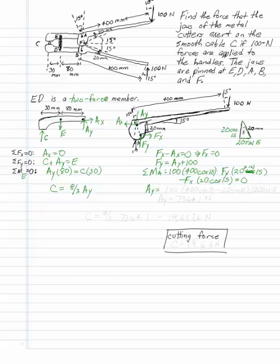You get A, Y is 100 times 400 cosine 15 minus 20 sine 15 divided by 20 sine 15. That gives you A, Y is 7364.1 newtons.